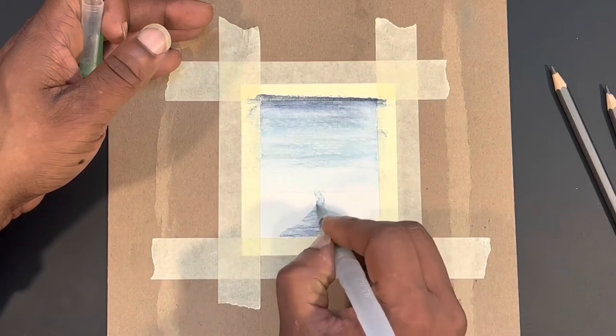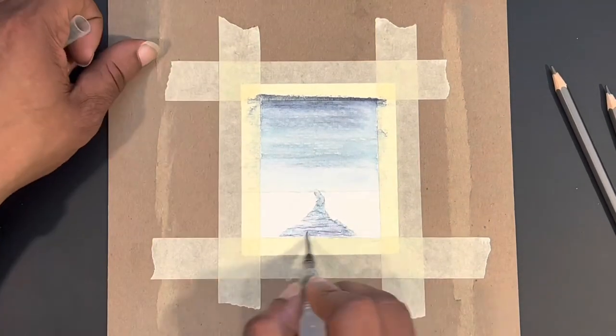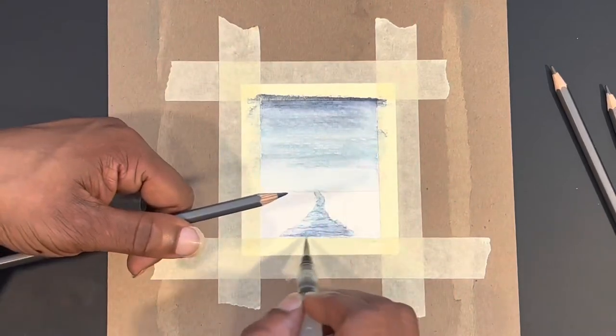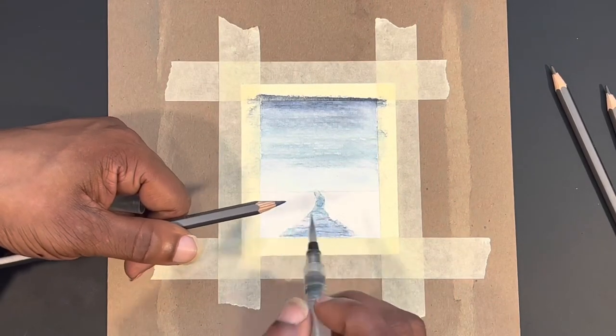So I'm just using those combinations of blues to pull off my sky as well as the little stream that I have coming from the horizon to the foreground.